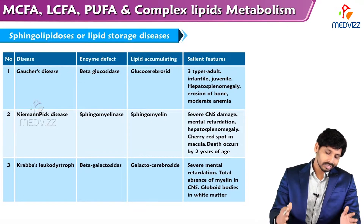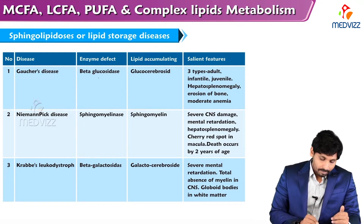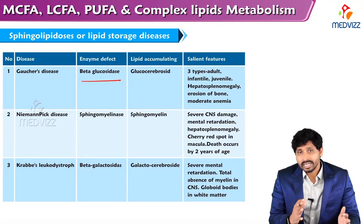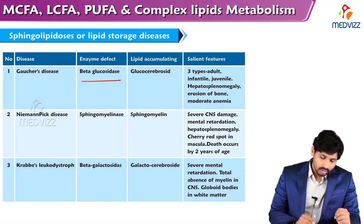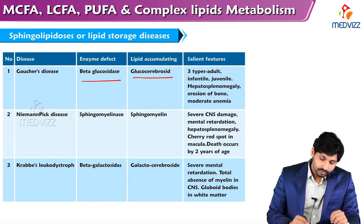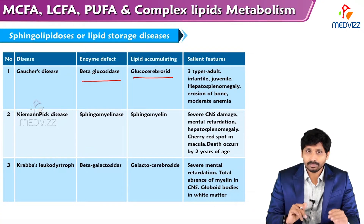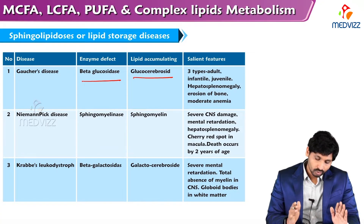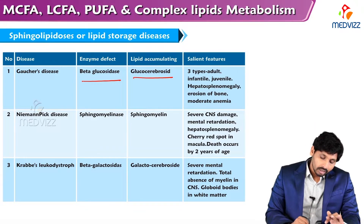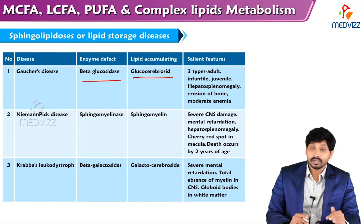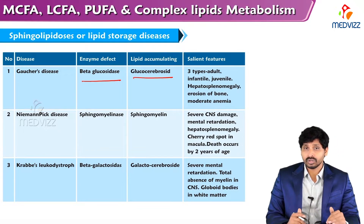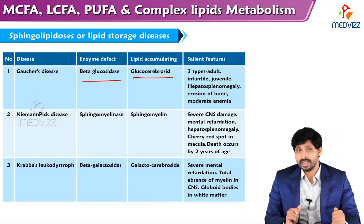Starting with Gaucher's disease, it is caused by deficiency of the enzyme beta-glucosidase. The accumulated lipid is glucocerebroside, a complex lipid. There are three types of Gaucher's disease based on the type of accumulation: Adult, Infantile, and Juvenile. The main prominent features are hepatosplenomegaly, erosion of bone, and moderate anemia.